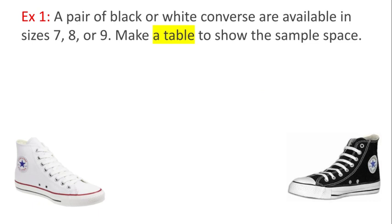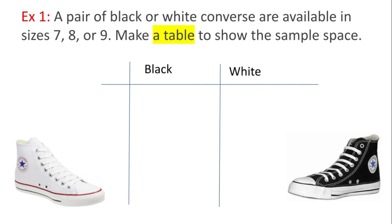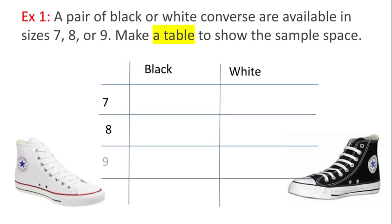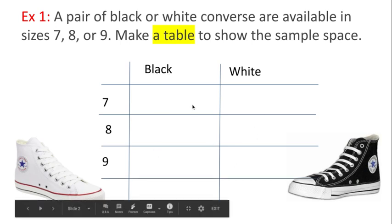The first example says a pair of black or white Converse are available in sizes 7, 8, or 9. Make a table to show the sample space. I made a super simple table. I'll put the color options along the top and the size options along the side and then I'll just fill in each of these boxes with the corresponding outcome.